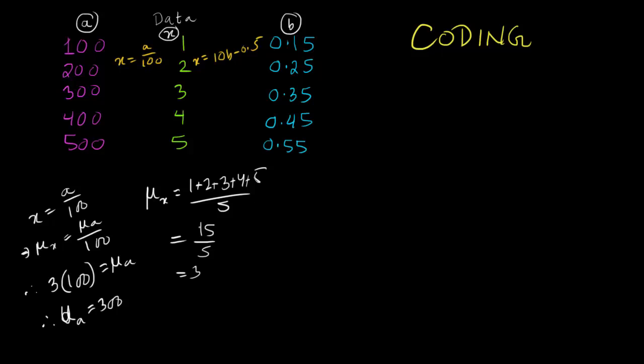We can do the same thing here. We know that x equals to 10B minus 0.5. So the mean of x equals to 10 times the mean of B minus 0.5 and the mean of x we know is 3. This is going to be 10 mean of B minus 0.5. If we send this to the other side, it becomes 3 plus 0.5, 3.5 equals to 10 into mu of B. Therefore, 3.5 divided by 10 is going to be 0.35. So the mean of this data, B set, is going to be 0.35.